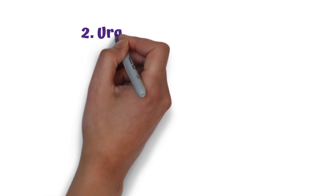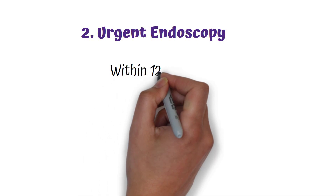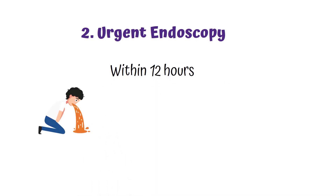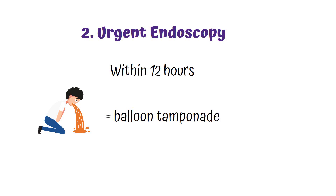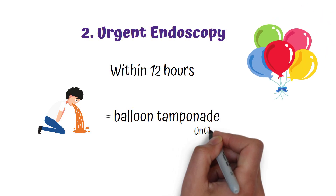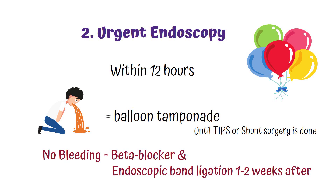After initial treatment, urgent endoscopy should be done within 12 hours to diagnose and treat the active bleeding. Patients who are actively bleeding require balloon tamponade to temporarily stop bleeding until a TIPS or shunt surgery is done. Patients without further bleeding will be given beta blockers and endoscopic band ligation one to two weeks later as secondary prophylaxis.